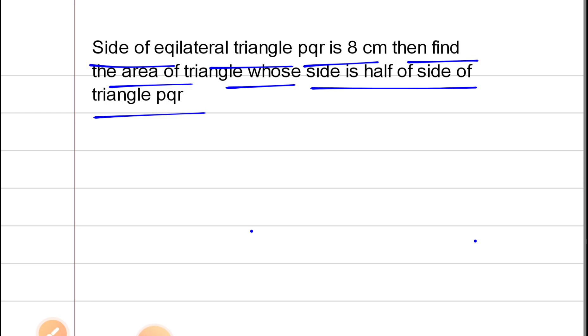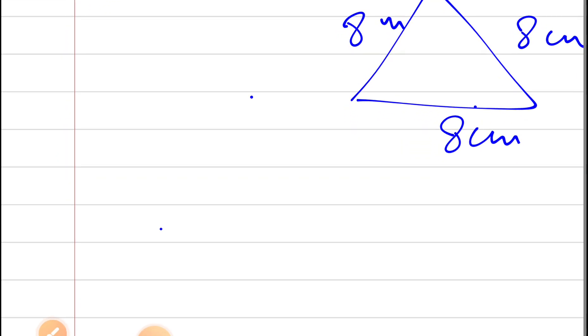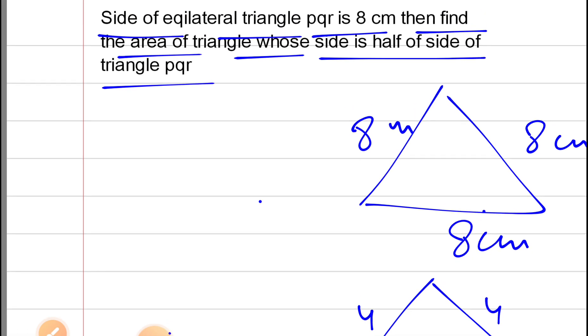It means we have given a triangle whose side is 8 cm because it is an equilateral triangle. So we need to find the area of triangle whose side is half of it. So the triangle will be 4, 4 and 4 which is also an equilateral triangle.